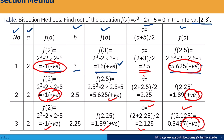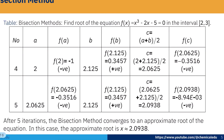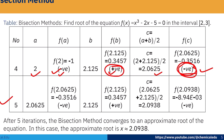The root lies between 2 and 2.125. For iteration 4: b = 2.125 is positive, so c = 2.0625, and f(c) is negative. The root lies between c and b. For iteration 5: a becomes 2.0625 and b remains 2.125. The new midpoint is 2.0938.